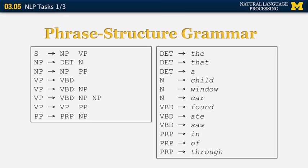The verb phrase can be a past tense verb (VBD), a past tense verb followed by a noun phrase for transitive verbs, a past tense verb followed by two noun phrases, or it can include a prepositional phrase — such as 'Sally ate pizza with pleasure,' where 'with pleasure' modifies the verb. PP stands for prepositional phrase, and its first element is the preposition itself, labeled PRP here — in some cases just PR. Now let's look at the lexicon. In this grammar, a determiner can be 'the,' 'that,' or 'a.'